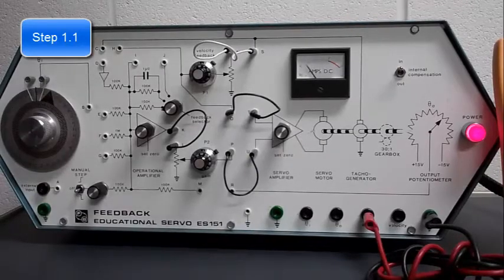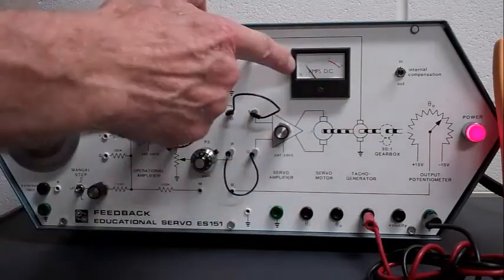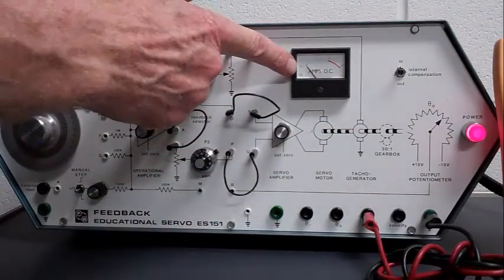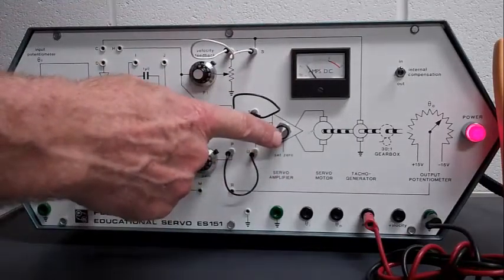To zero the servo amplifier, we turn this knob until the current through the servo motor is minimized. It's a zero set knob.